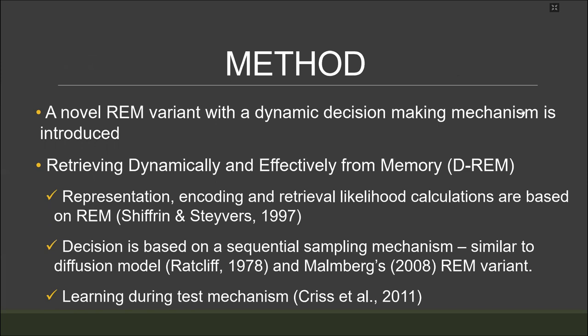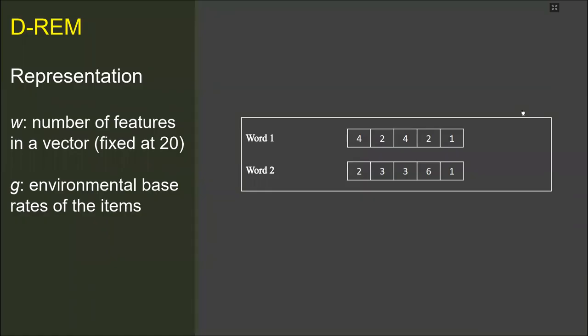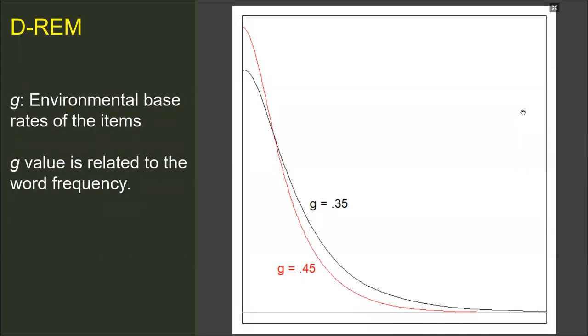The representation, encoding, and retrieval calculations are the same as the original REM. However, it includes a sequential sampling mechanism for the decision making phase. Firstly, the model assumes that items are represented as vectors of features. The number of features in a vector is determined by the parameter w. The item features are positive integers, samples from a geometric distribution with the parameter g. In the graph, you can see that the probability densities of the sampled integers in two g values. Lower g values cause greater probabilities of sampling bigger numbers. Low frequent words, which are created by lower g values, include higher values in general.